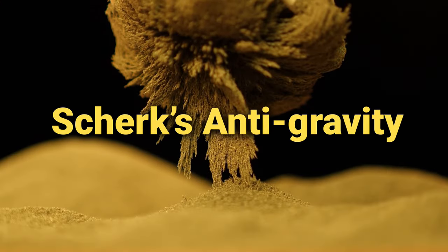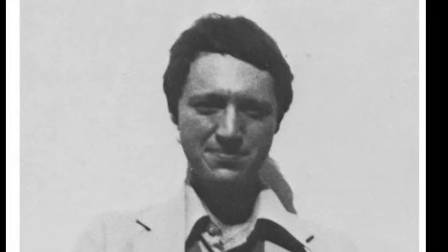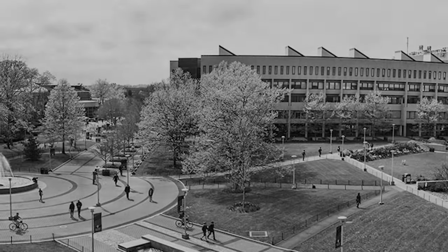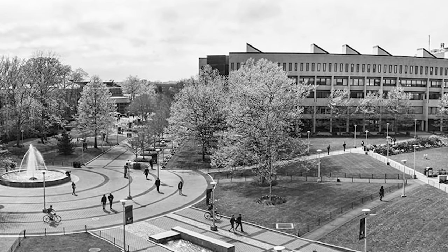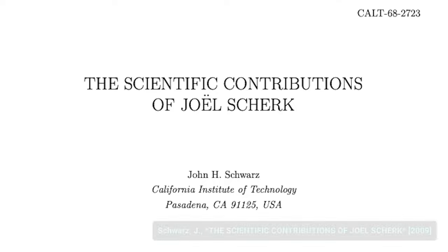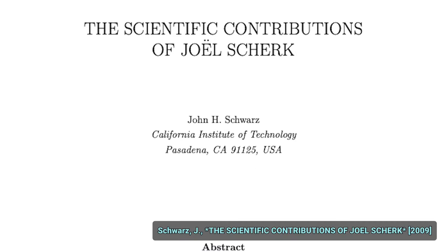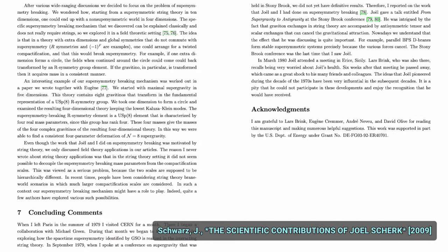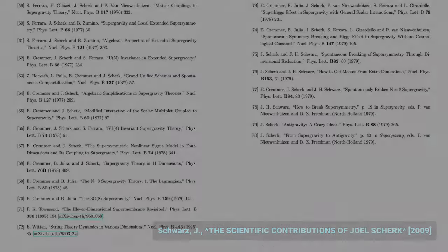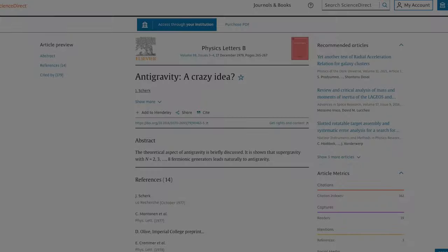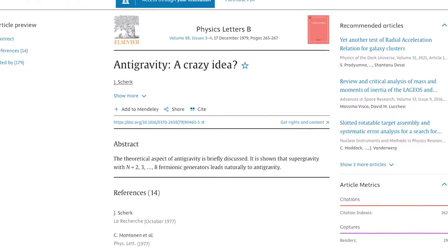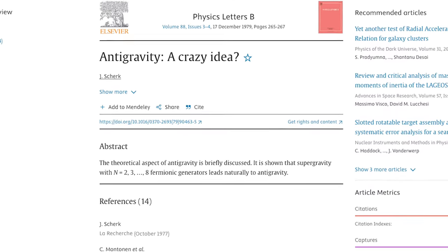Scherk's Anti-Gravity. Joel Scherk is one of the founders of string theory who unfortunately died unexpectedly in tragic circumstances only months after the supergravity workshop at Stony Brook in 1979. The workshop proceedings were dedicated to his memory with a statement that Scherk, who was diabetic, had been trapped somewhere without his insulin and went into a diabetic coma. He was only 33 years old. A year prior to his death, Scherk published a little-known paper titled Antigravity, A Crazy Idea.